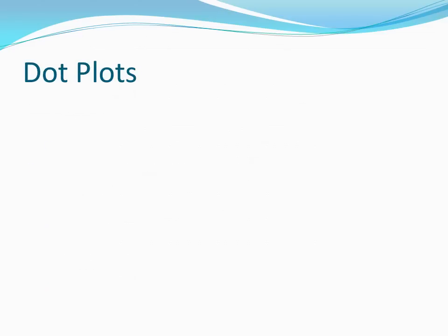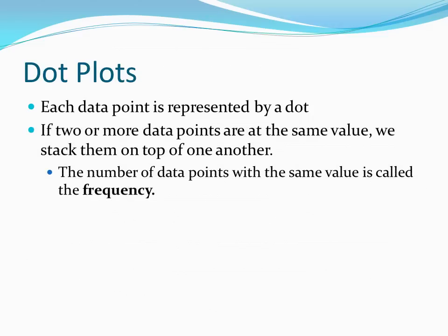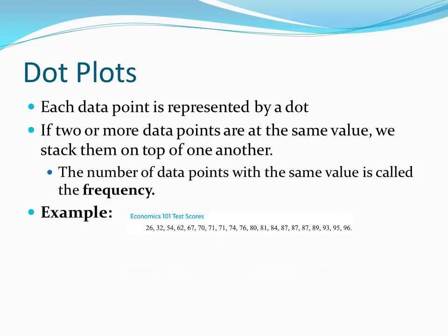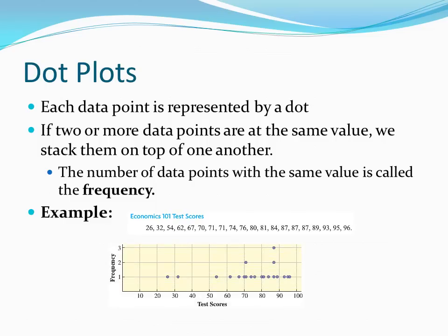The first type of graph we will look at are dot plots. In a dot plot, each data point is represented by a dot. If two or more data points are at the same value, we stack them on top of one another, and the number of data points at the same value is the frequency. So let's take a look at an example of a dot plot. You can see here we have a set of test scores for an Econ 101 course. If we graph them as a dot plot and stack the repeated scores on top of one another, our dot plot will look something like this.